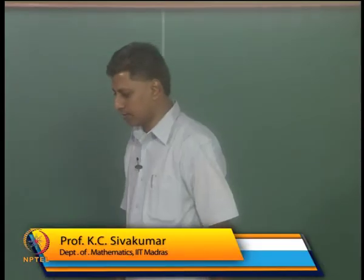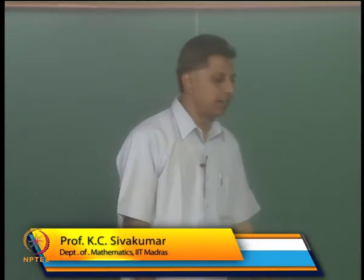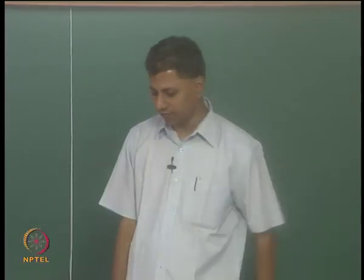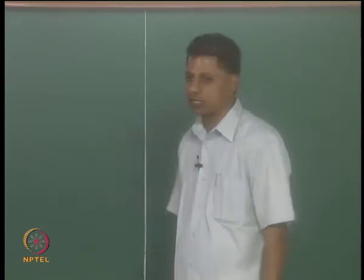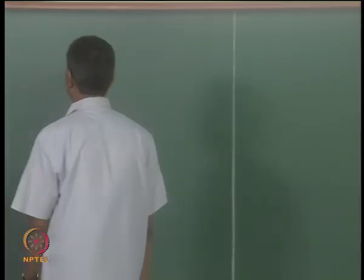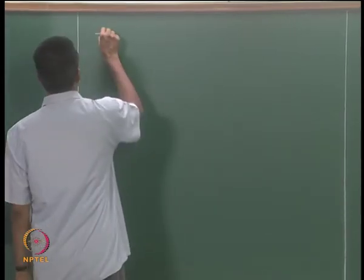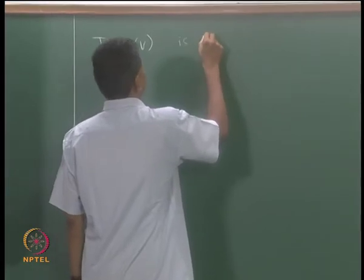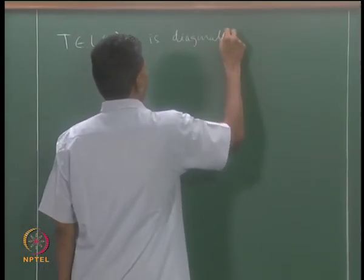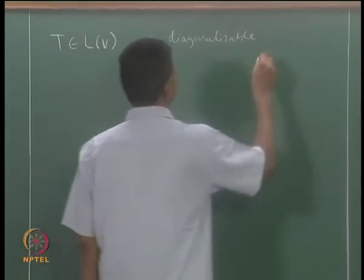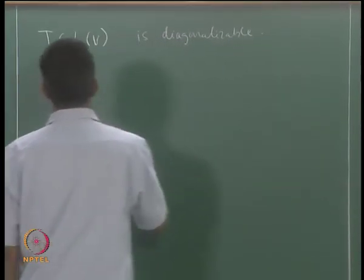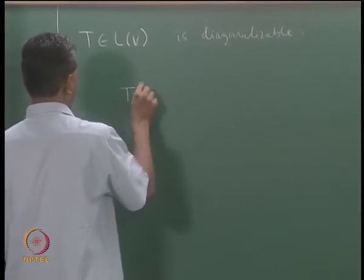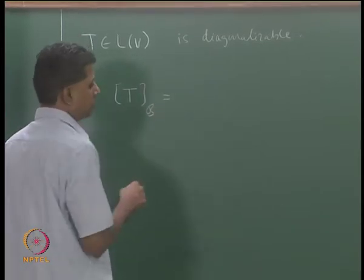We are discussing diagonalizability. In today's lecture we will derive one necessary and sufficient condition for diagonalizability of a linear operator. Let us look at this problem: diagonalizability of a linear operator T means that I can write down the matrix of T relative to some basis as a diagonal matrix.